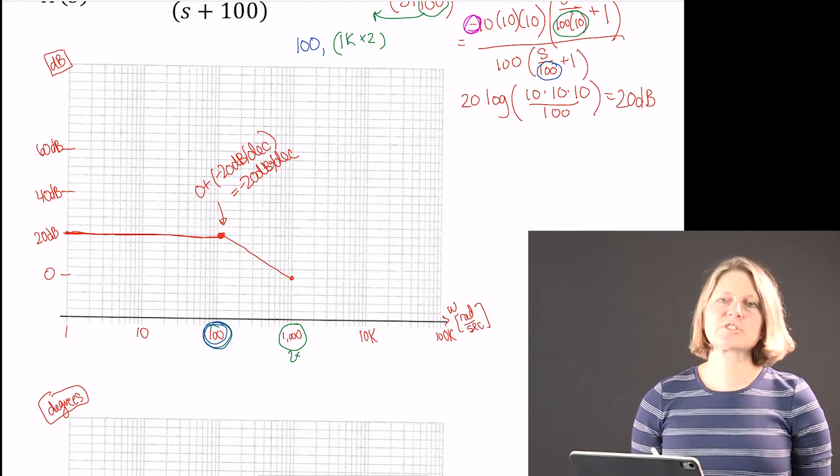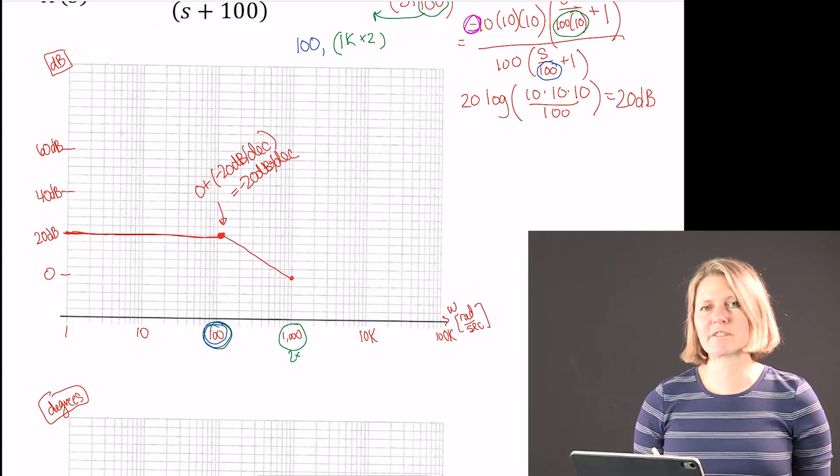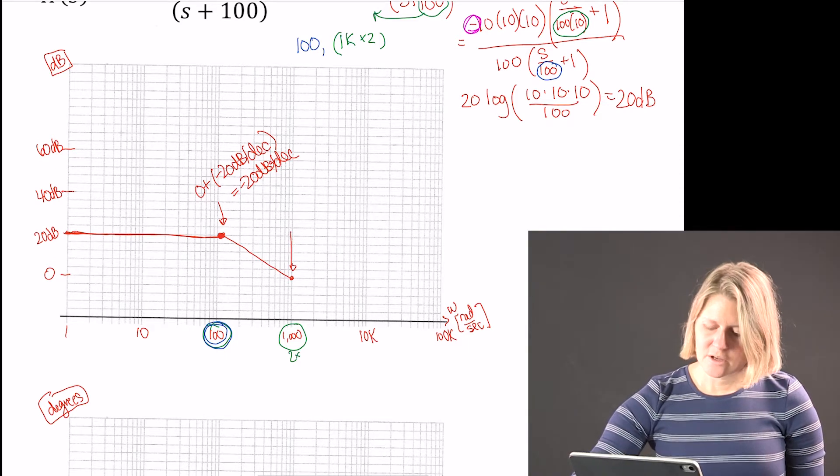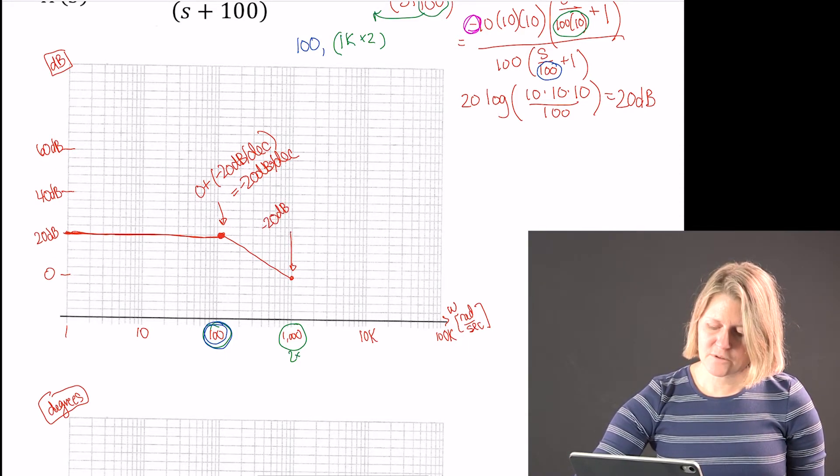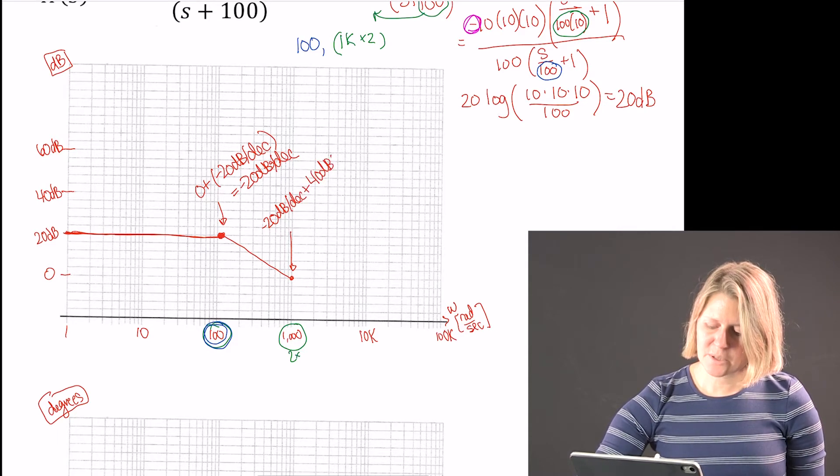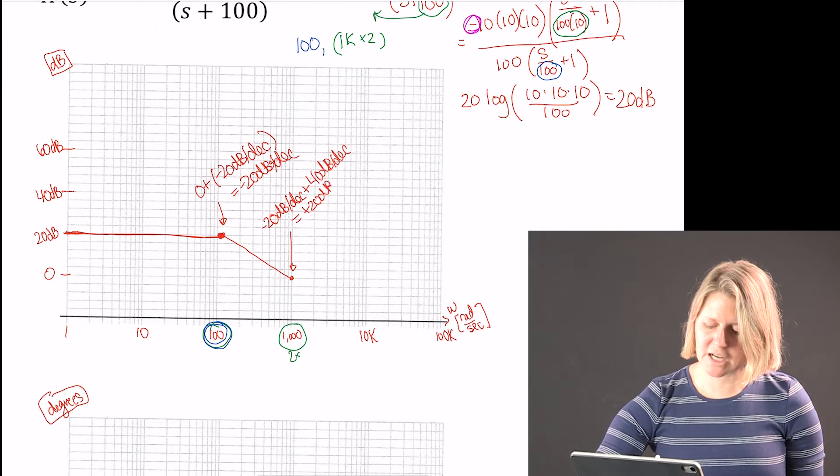So if we go down that's going to go down to zero within one decade. And then we also have a change at 1000. So at 1000 we have a change of two of the effects of a zero which is plus 20 dB per each one.